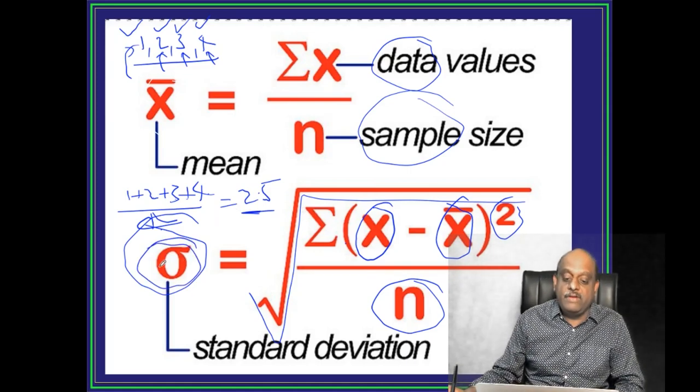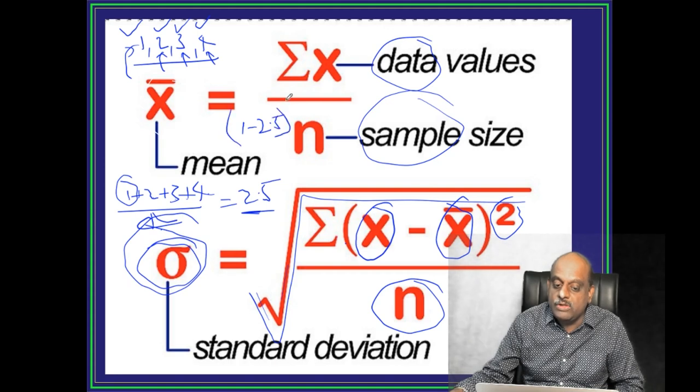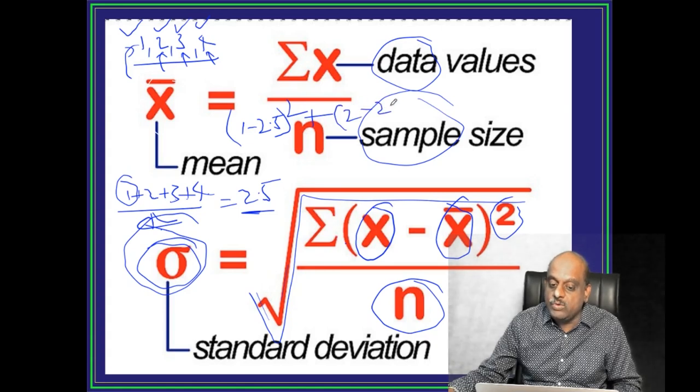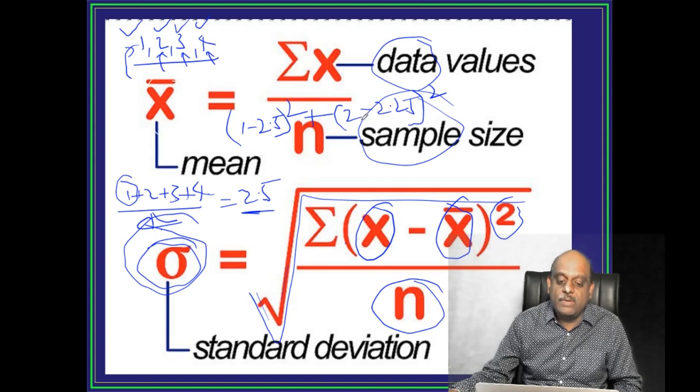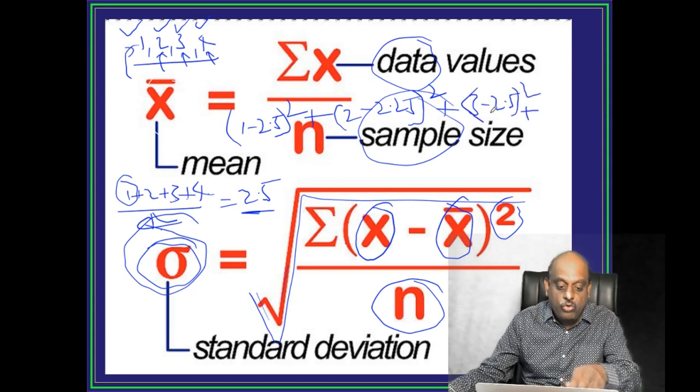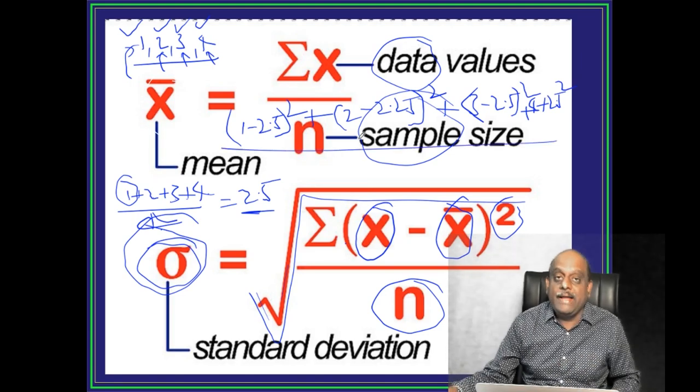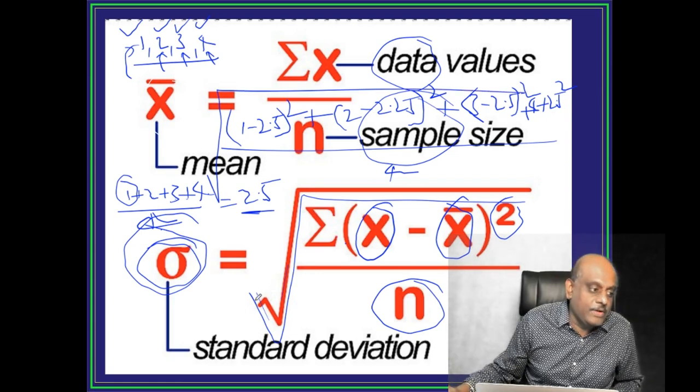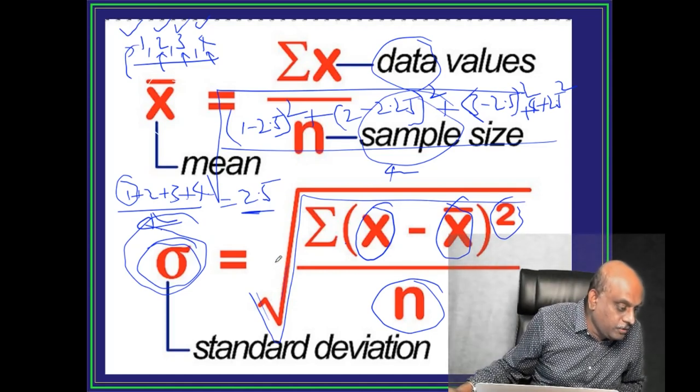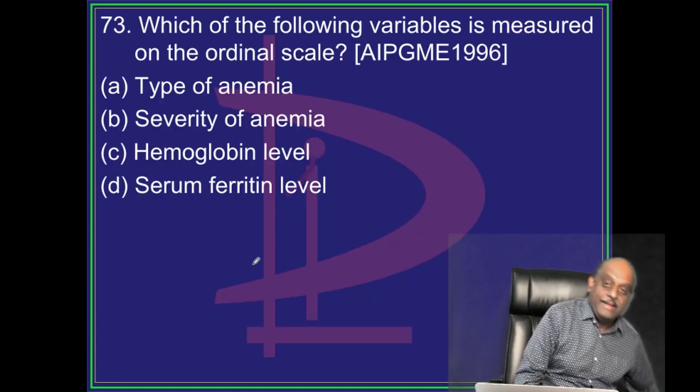Now, how will you calculate standard deviation? Square root of first value, 1. So, 1 minus 2.5 whole square plus second value, 2 minus 2.5 whole square plus third value, 3 minus 2.5 whole square plus fourth value, 4 plus 2.5 whole square. The whole thing divided by how many values? 4. E poore ka square root lelo. Wo aage aapko standard deviation. Samajh mein aaya na? Badiya.